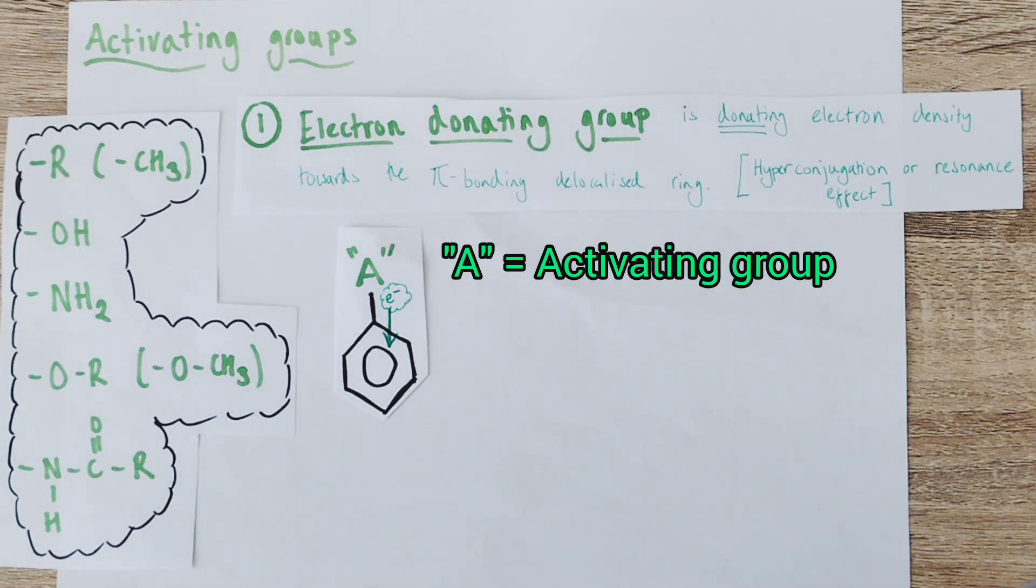Or it could be via some resonance between the functional group and the benzene ring structure, donating a pair of electrons towards the delocalized ring structure, such as in the case of the OH group in phenol or the amine group in phenyl amine.